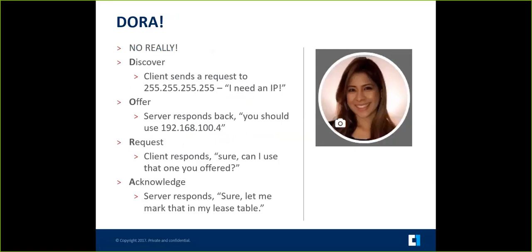If the DHCP server is on the same network as the client, it will respond directly. Most of the time, the DHCP server is not on the same network as the client — that's where the IP helper command comes in. The IP helper command tells the switch where the DHCP server is, and sends a unicast off to the DHCP server. The DHCP server responds with a unicast back to the SVI, which then broadcasts that offer back to the client.